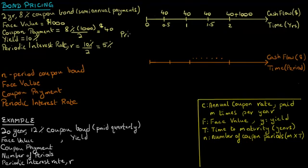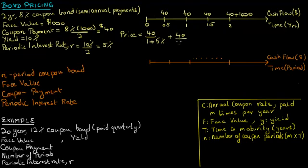The price of this bond is just the present value of these cash flows, and equals the first coupon payment received at the end of the first period in six months, discounted at the periodic interest rate of 5%, plus the second coupon payment of $40 discounted at the periodic interest rate of 5% over two periods.